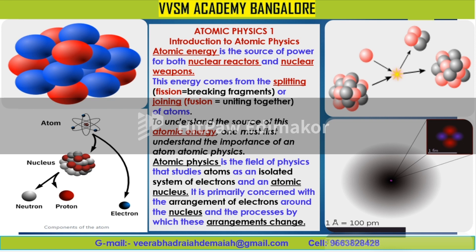This energy comes from where? Splitting — splitting means fission, nuclear fission. Fission means breaking into fragments. What is the joining? Fusion means unifying — the uniting together of atoms. So the atomic energy or nuclear energy are of two types: nuclear fission and nuclear fusion. Fission means breaking and fusion means uniting together of two atoms.